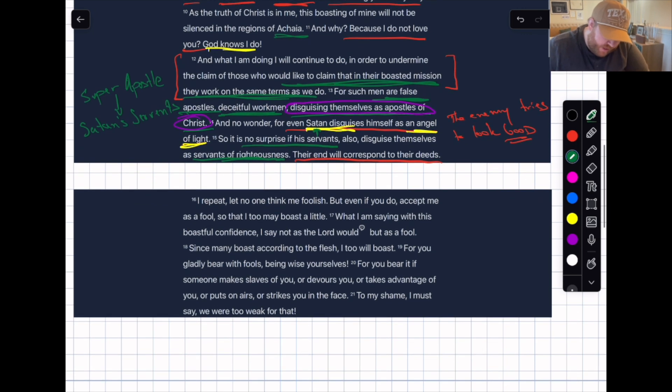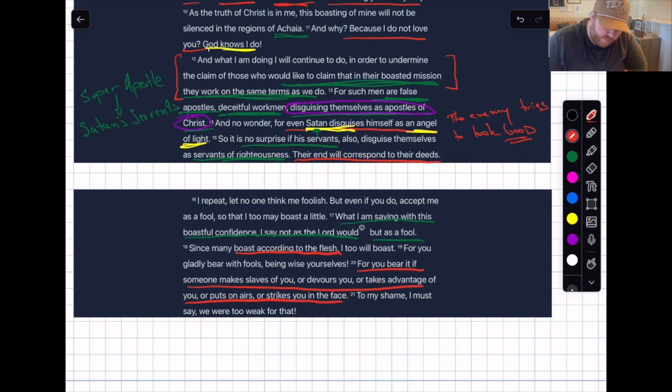I repeat, let no one think me foolish, but even if you do, accept me as a fool so that I may boast a little. What I'm saying with this boastful confidence, I say not as the Lord would, but as a fool. Paul's saying listen, as I'm boasting you're going to think I'm a fool because I'm not like these other guys. Since many boast according to the flesh, I too will boast. For you gladly bear with fools, being wise yourselves. For you bear it if someone makes slaves of you, or devours you, or takes advantage of you, or puts on airs, or strikes you in the face. He's saying you can accept me as a fool because look what you've already accepted.